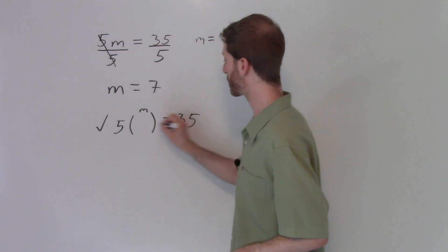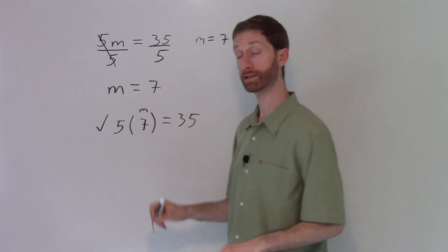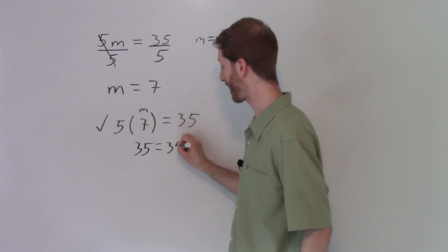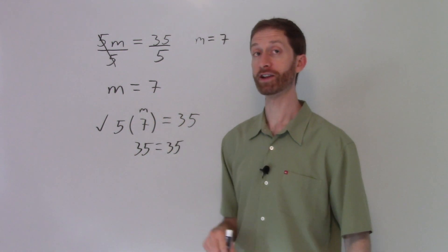And we're going to plug in seven for m and see that five times seven equals 35. And since 35 is 35, we know that seven is our answer.